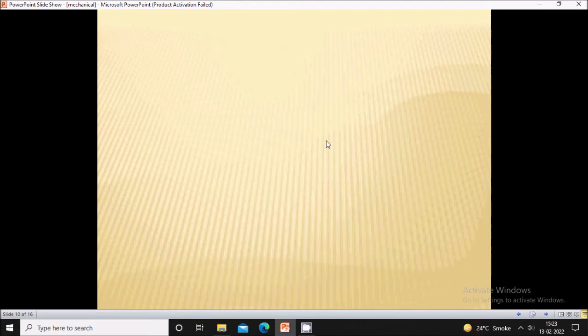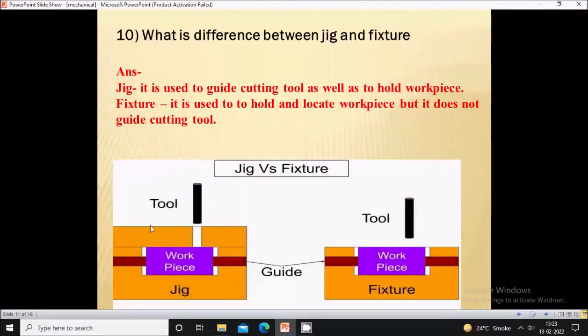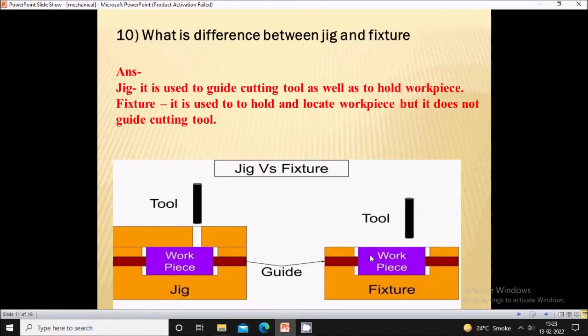What is the difference between jig and fixture? Jig is used to guide the cutting tool as well as hold the workpieces, while fixture is used to only hold and locate the workpiece. It does not guide the cutting tool.